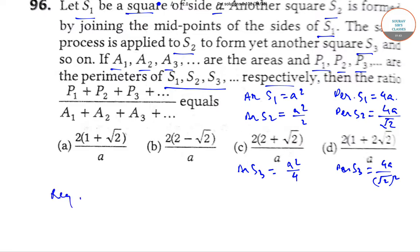So, the required ratio is equal to 4A by root 2 plus 4A by root 2 squared and so on